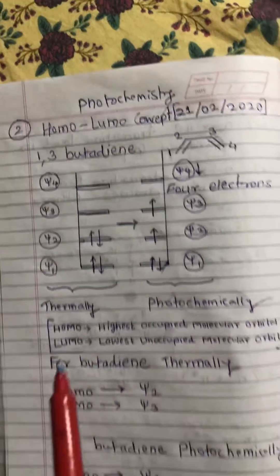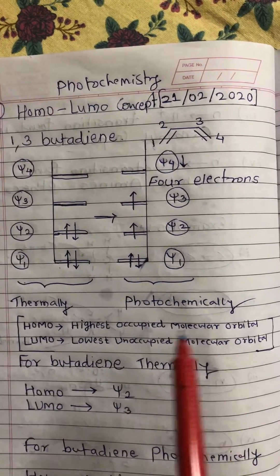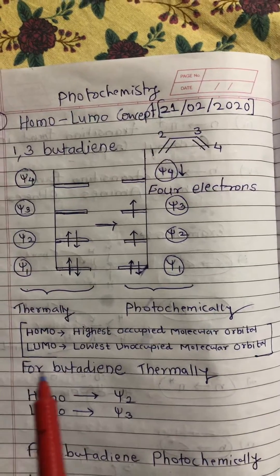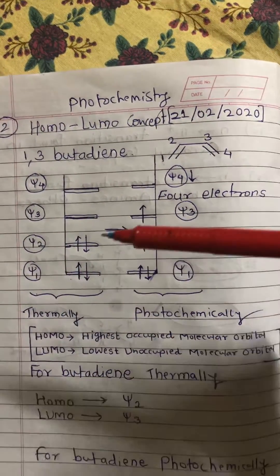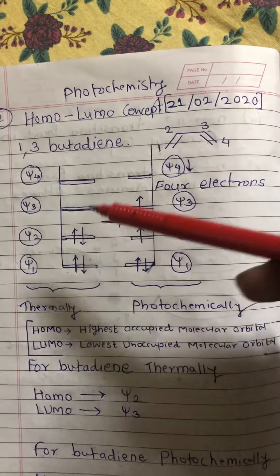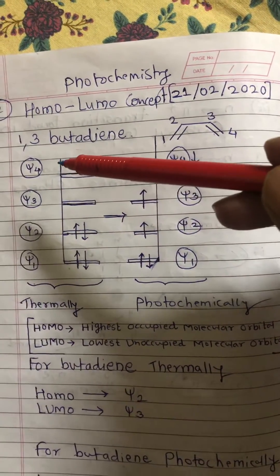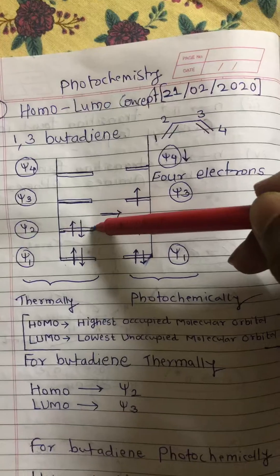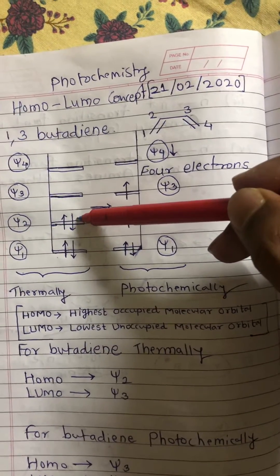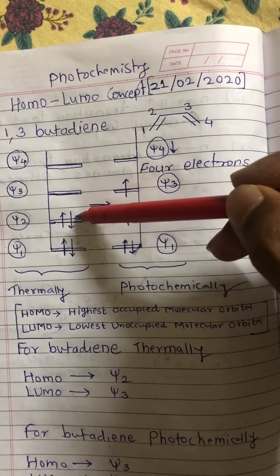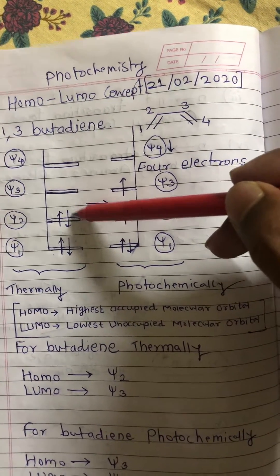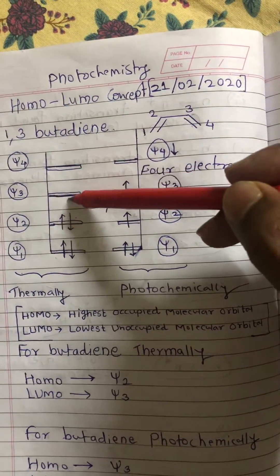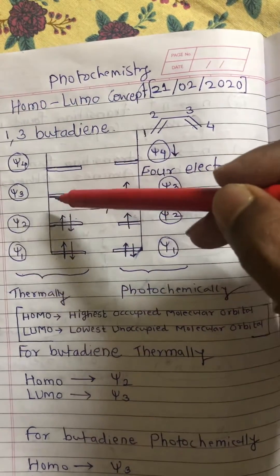HOMO is the highest occupied molecular orbital and LUMO is the lowest unoccupied molecular orbital. For butadiene thermally, the four molecular orbitals are ψ1, ψ2, ψ3, and ψ4. The highest occupied one is ψ2, so thermally HOMO is ψ2. For butadiene thermally, LUMO is ψ3, because among the unoccupied orbitals ψ3 and ψ4, ψ3 is the lowest.